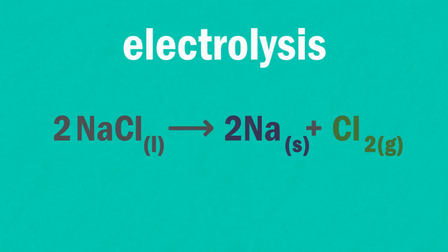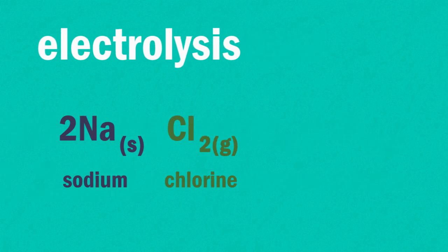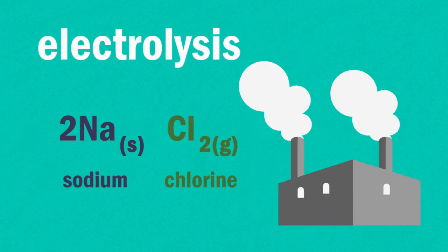Overall, the electrolysis has split the molten sodium chloride into its elements, sodium and chlorine. And this is how sodium and chlorine are produced industrially.